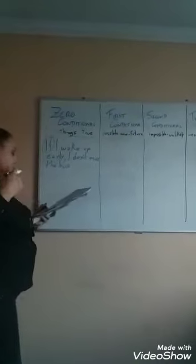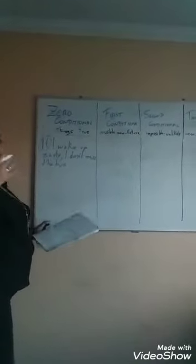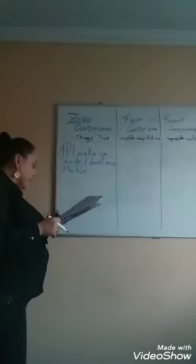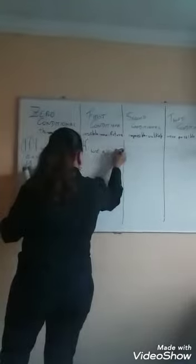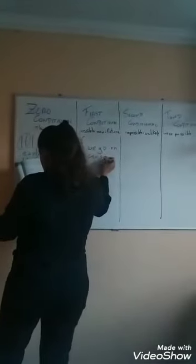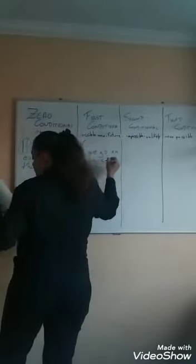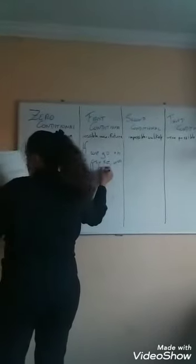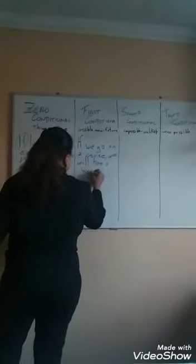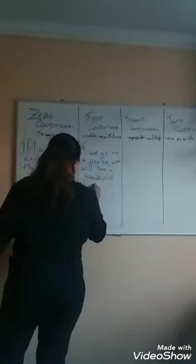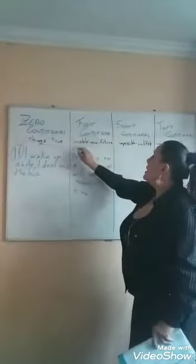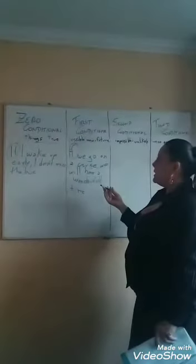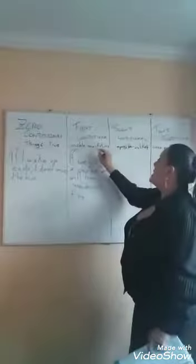Now I am going to explain the first conditional. The first conditional is something that is possible either now or in the future. For example, if we go on a cruise, we will have a wonderful time. So this is possible — that's why it's the first conditional. If we go on a cruise, it's a possibility that it can happen or not, and it can be in the future.